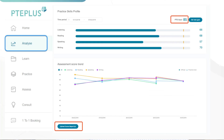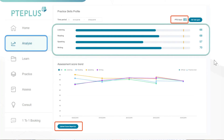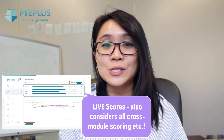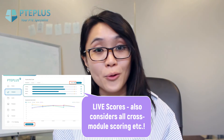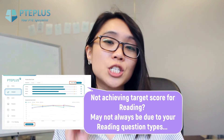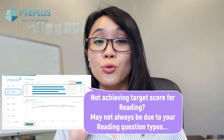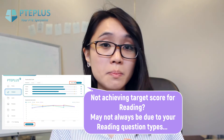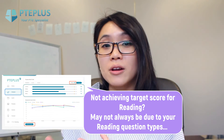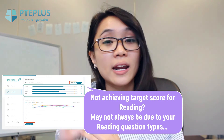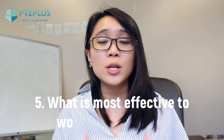You can always track your scores in the analyze section of your course. Everything you do in the course is analyzed there, and you'll be able to see your skills profile calculated live, taking into account all the cross-module score contributions we talked about. If you're not achieving your target score for reading, the problem may not be your reading question types — it might lie in other areas and modules affecting your reading score.